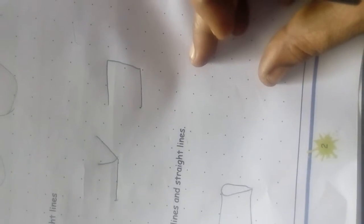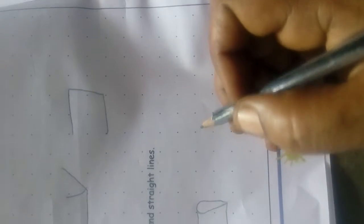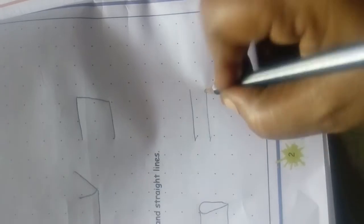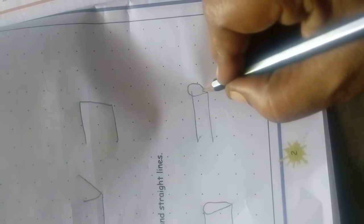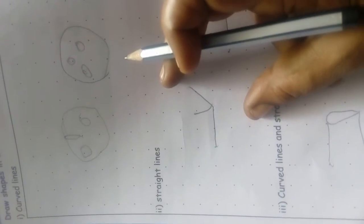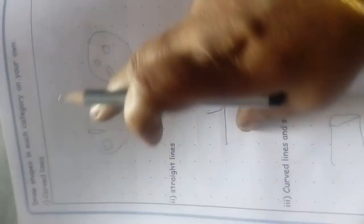Curve lines and straight lines. Here is the dots and curve lines, straight lines and curve lines. We drop each in the dots. Let's start. Here is the straight lines, here is the curve lines. Here is the dots. Curve lines and straight lines. Draw the dots. Only straight lines, this curve lines. This page will finish.